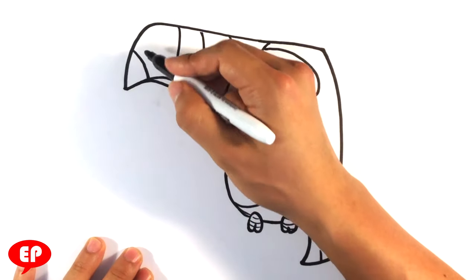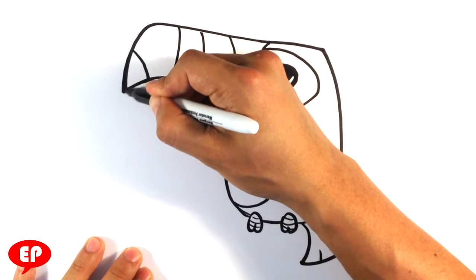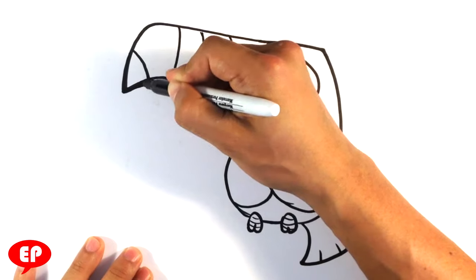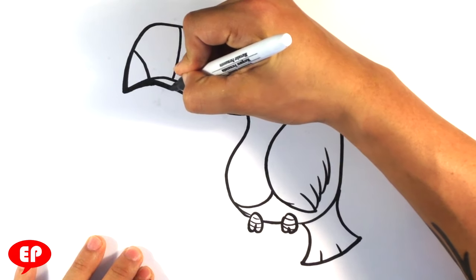So, now what I'm going to do is I'm going to do what I always do, which is throw a thick line on the contour.